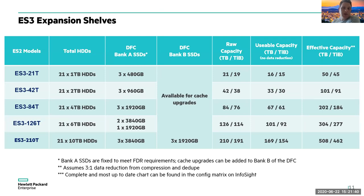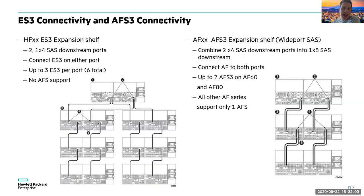Here are the current expansion shelf options. For ES3 shelves on hybrid systems, drive sizes are 1 TB, 2 TB, 4 TB, 6 TB, and 10 TB, giving raw capacities of 21, 42, 84, 126, and 210 terabytes. These shelves also come with a certain amount of cache. This is how they connect up — it's pretty straightforward.